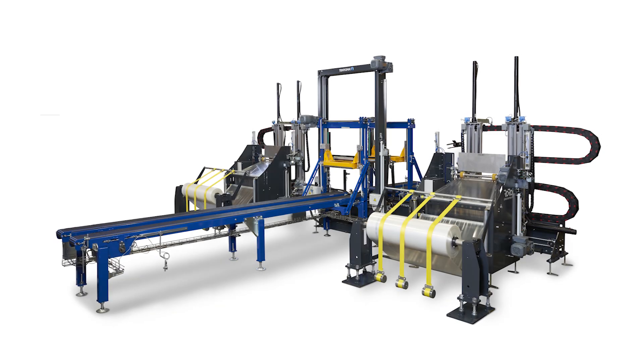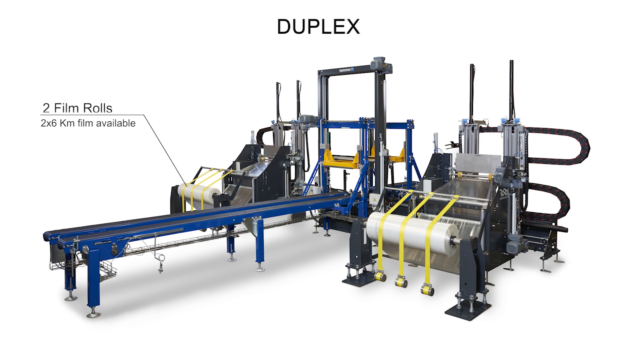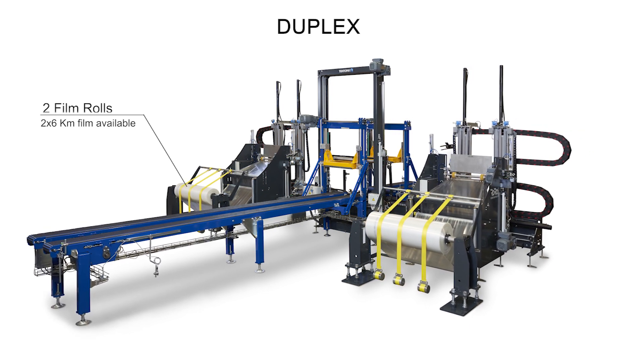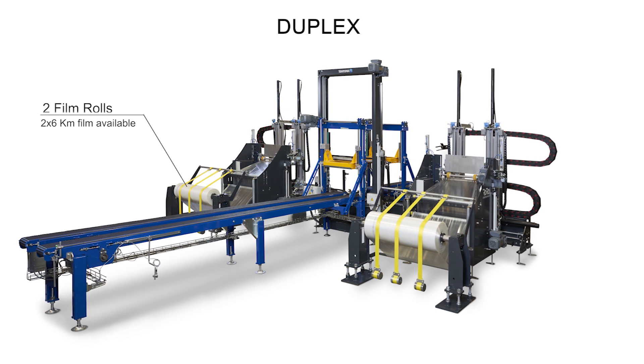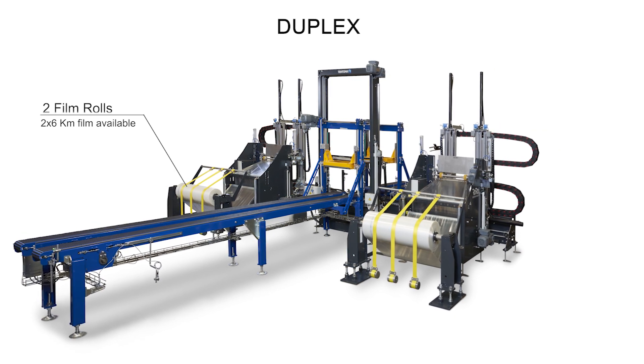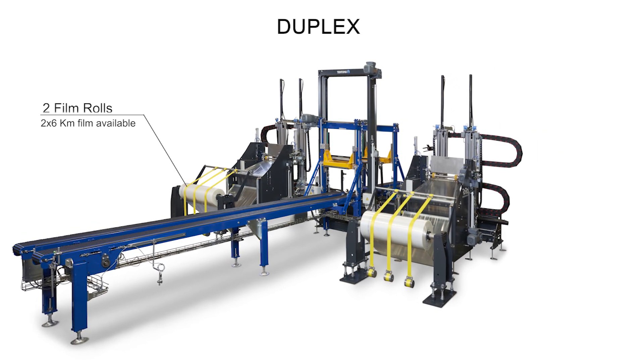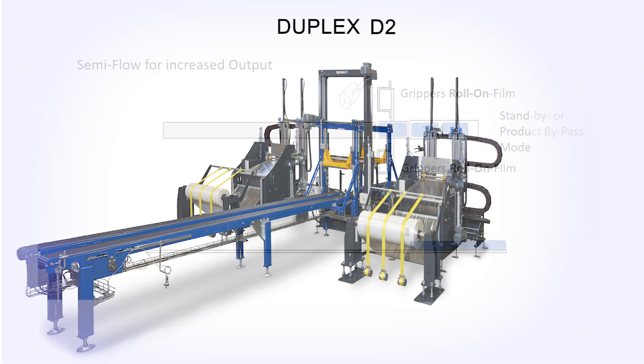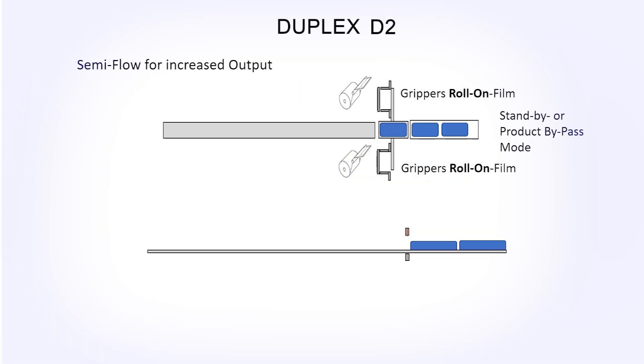Now you see the duplex machinery consists of minimum two film stations, and with a 40 micron film you will have 12 kilometers of film available before you need to change film rolls. Let's go into detail and see how a duplex machine works and how industry required packaging capacities can be reached.